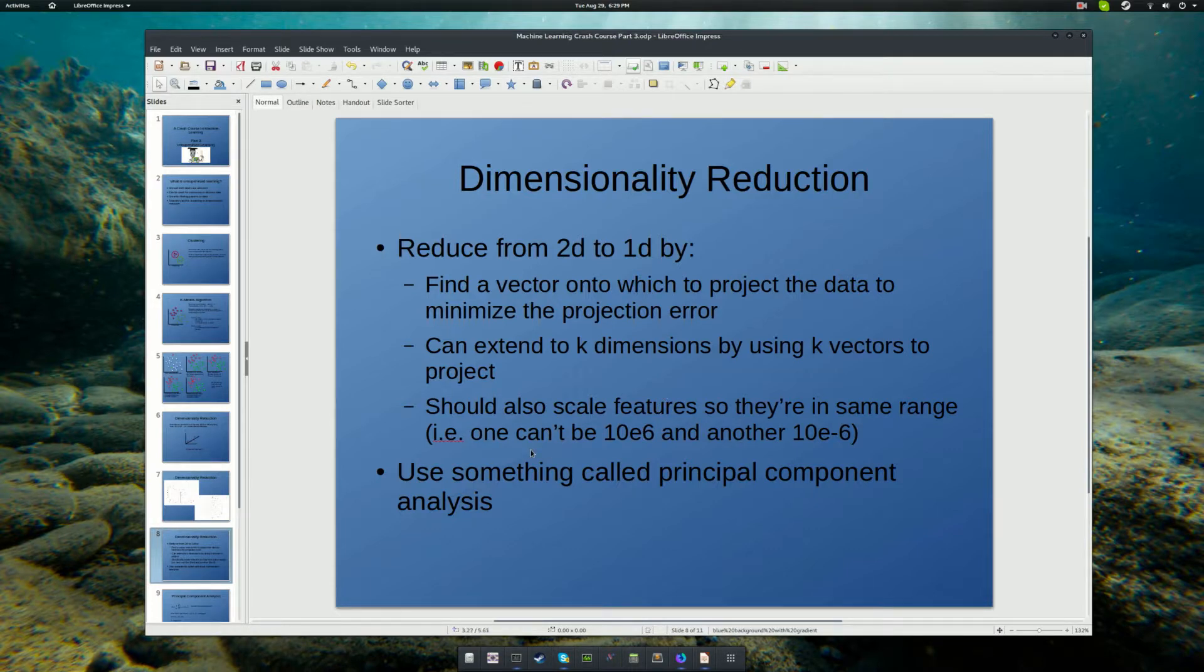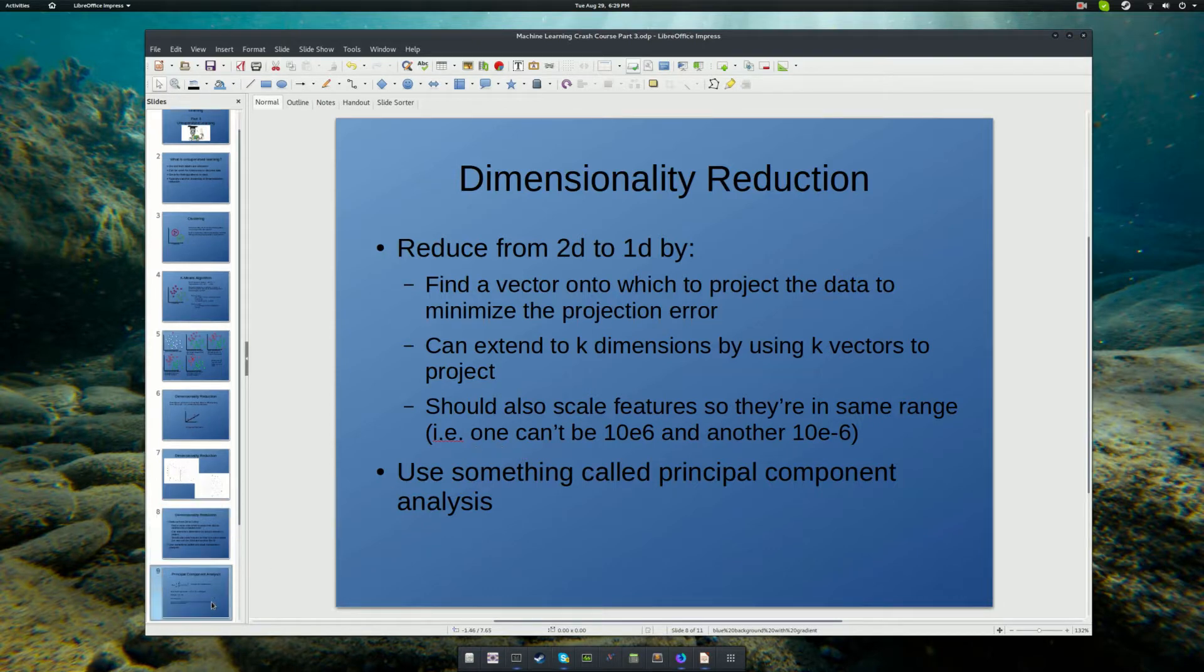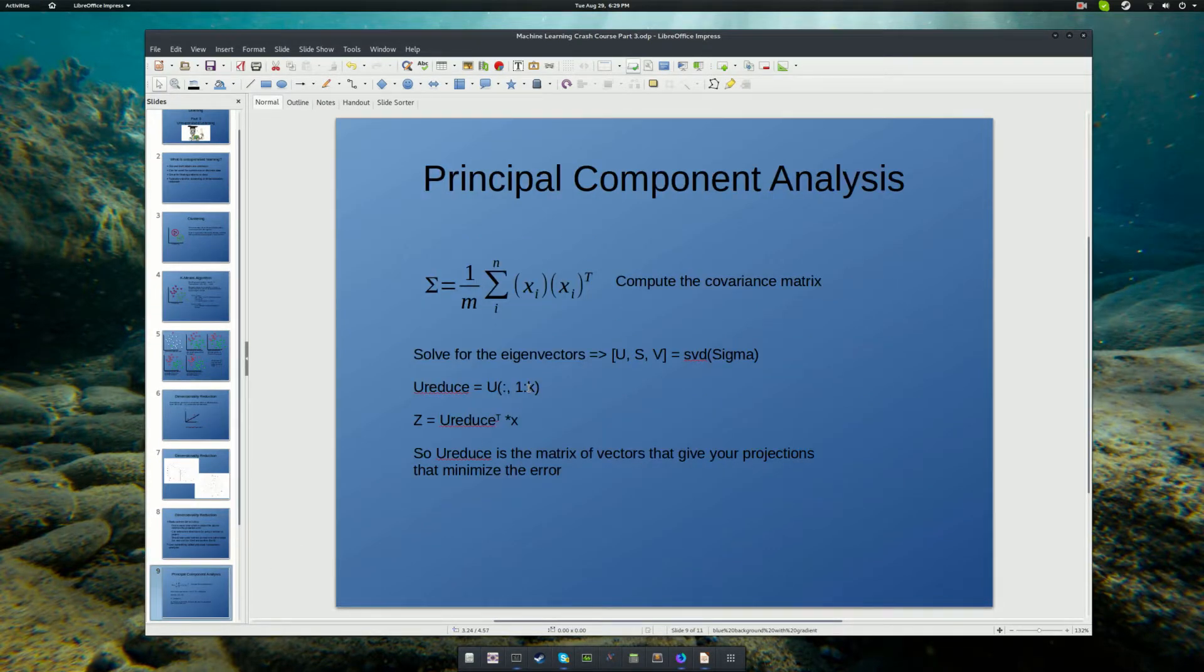And you use something called principal component analysis to achieve that. The algorithm for principal component analysis is pretty straightforward. You simply scale your vectors so that they're all in the same order of magnitude. And then you compute something called the covariance matrix. It's 1 over m times the sum of i to n of the input vectors x sub i times x sub i transpose. You're just taking the inner product.